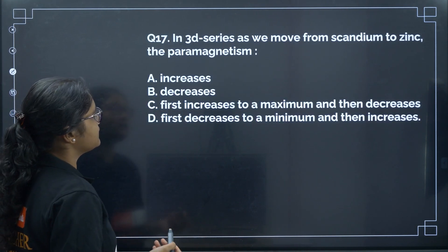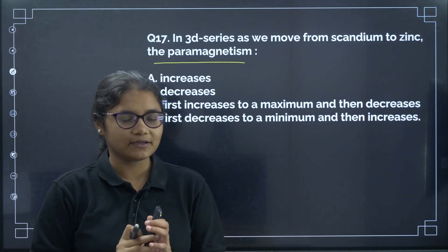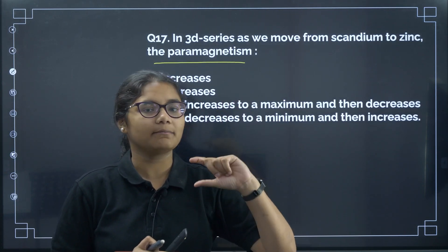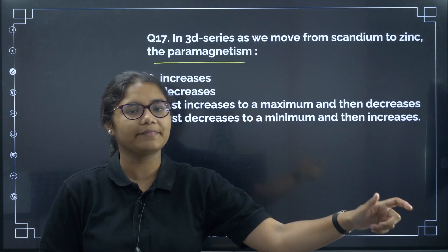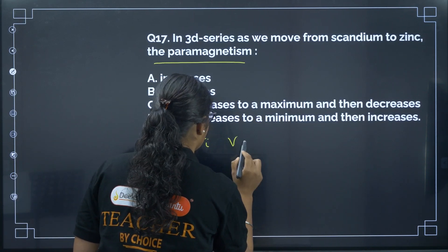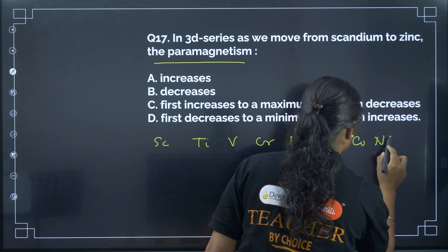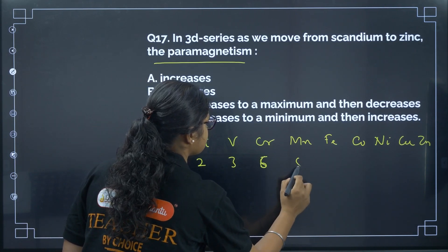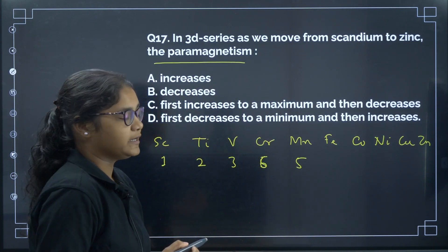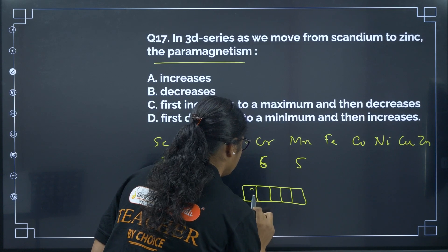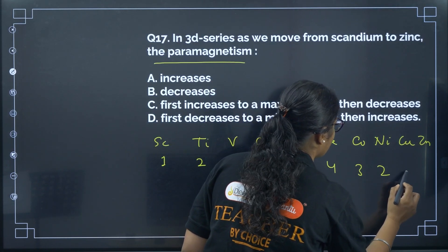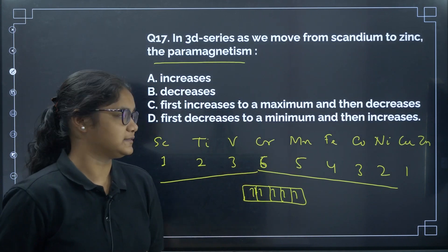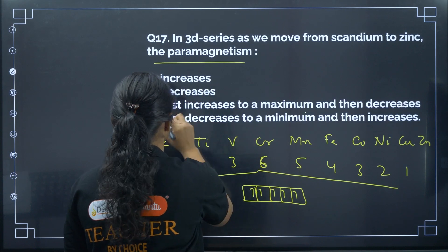Question 17: In the 3d series, as we move from scandium to zinc, how does paramagnetism change? The number of unpaired electrons first increases up to manganese and then decreases. Sc has 1, Ti has 2, V has 3, Cr has 6 (4s¹3d⁵), Mn has 5 (3d⁵), Fe has 4 (3d⁶), Co has 3, Ni has 2, Cu has 1, Zn has 0. So paramagnetism first increases to a maximum at manganese and then decreases. The correct answer is option C.